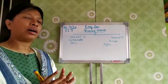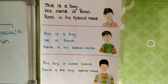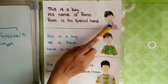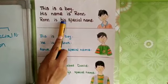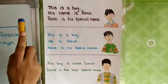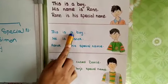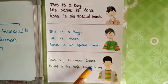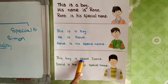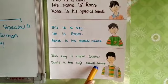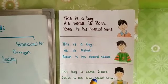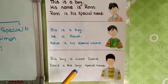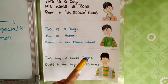Now I am going to show you a picture. Look at the picture here and we will read the sentence. This is a boy. His name is Ron — Ron is his special name. This is another boy — he is Ashok, Ashok is his special name. The third boy is called David — David is the boy's special name. So boy is the common name of these three persons, and each of the boys has their own special name: Ron, Ashok and David.